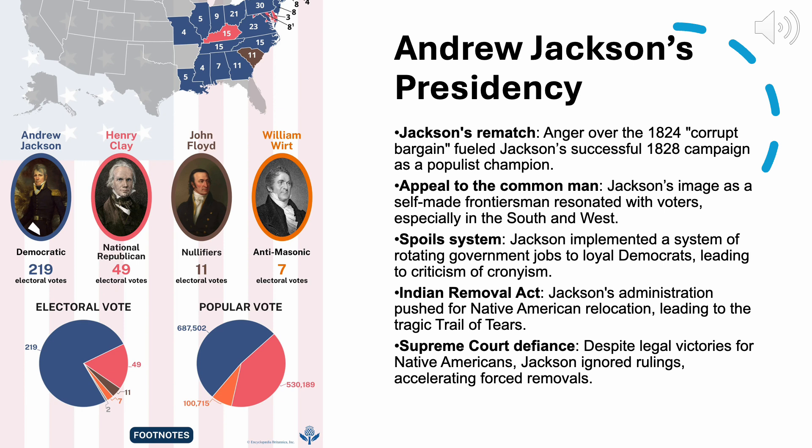Jackson's presidency was also marked by his controversial Indian removal policy, one of the most significant and troubling aspects of his administration. For years, the federal government had sought to acquire Native American lands east of the Mississippi River, but Jackson's administration intensified these efforts. Viewing Native American cultures as inferior and believing that their lands were better suited for white settlement, Jackson pushed for their removal to territories west of the Mississippi. The Indian Removal Act of 1830 authorized the president to negotiate treaties that would relocate Native American tribes to what is now Oklahoma.